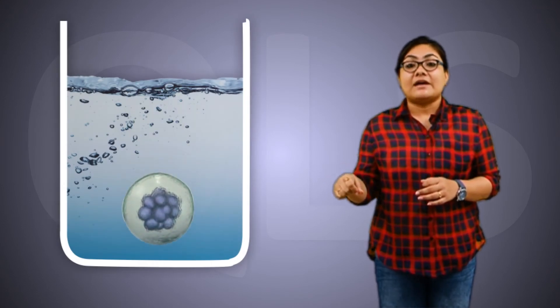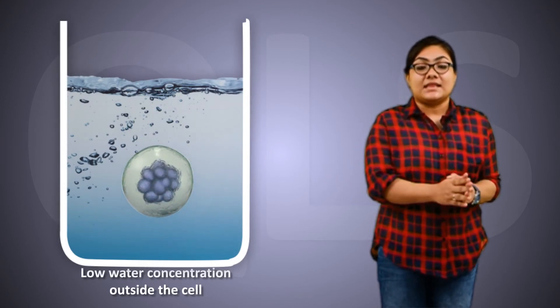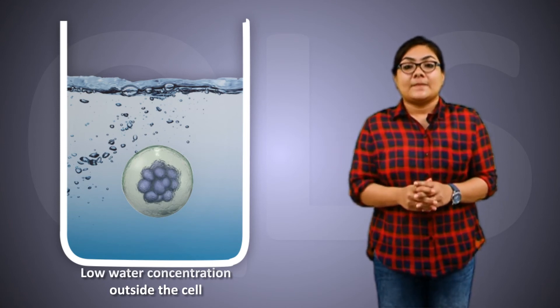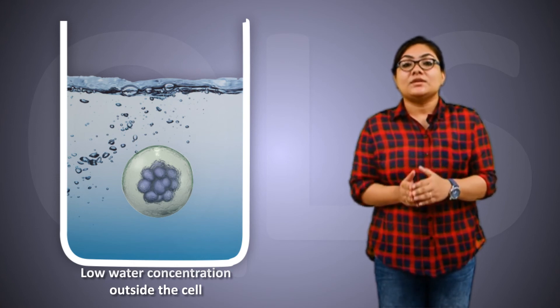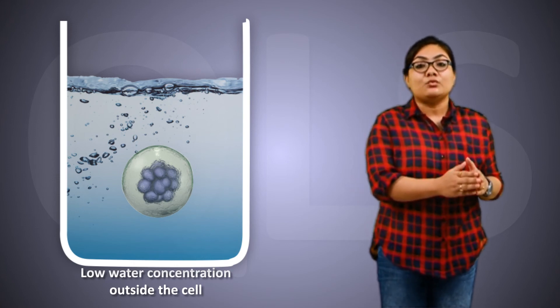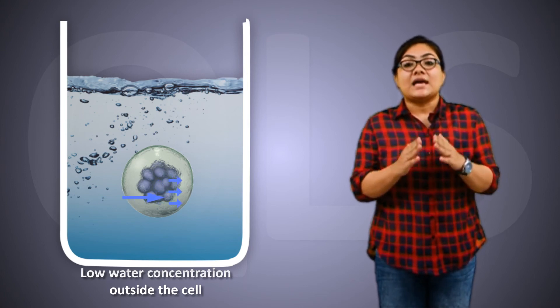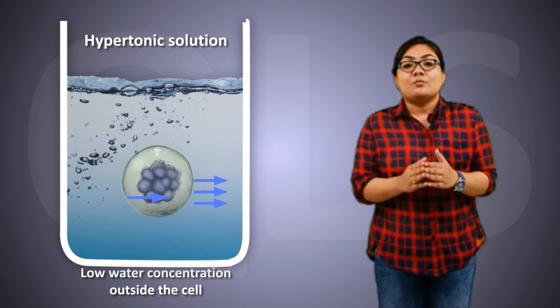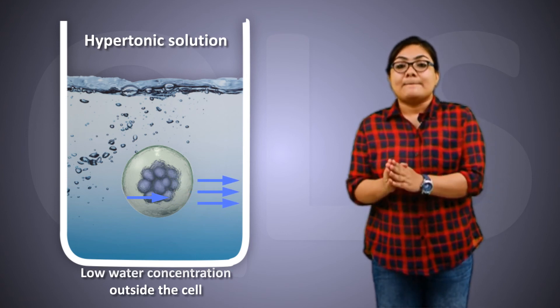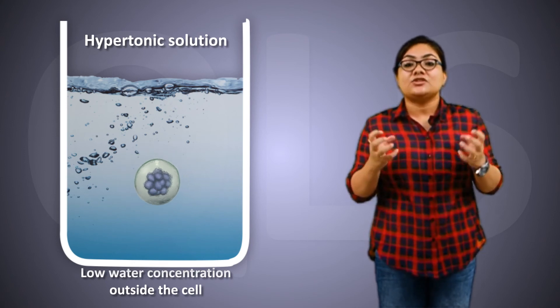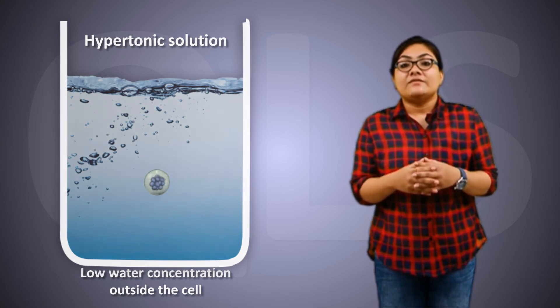In case three, we put the animal or plant cell in a medium having low water concentration than the cell — matlab medium mein salt ka concentration zyada hoga. Since the water concentration is low on the outside of the cell, the water moves out from the cell. This type of solution is called a hypertonic solution. There is movement of water in and out of the cell, but more water will move out of the cell. As a result, the cell will shrink — cell andar se shrink ho jayega.